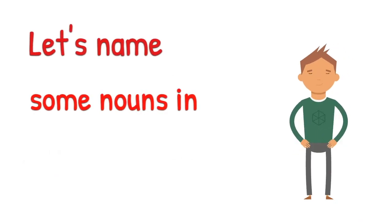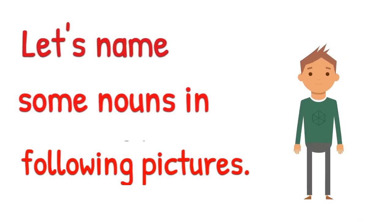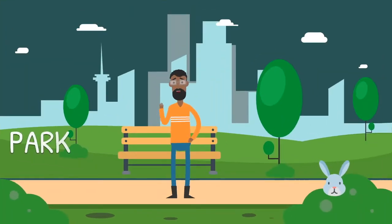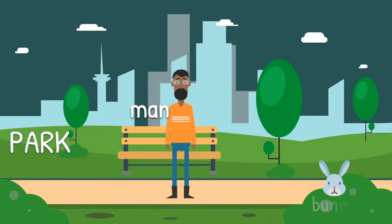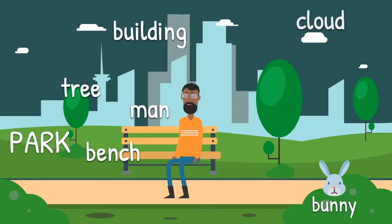Great. Now let's name some nouns in following pictures. I see park, which is a place. Man, which is a person. Bunny, animal. Tree, bench, building, cloud, those are things. Your turn, Georgie.